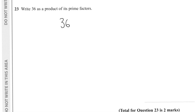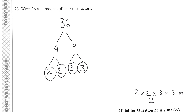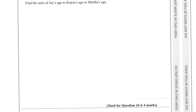Question twenty-three: write 36 as a product of its prime factors. Split 36 into 4 × 9. Then 4 = 2 × 2 and 9 = 3 × 3, all prime. So 36 = 2 × 2 × 3 × 3, which in index notation is 2² × 3².